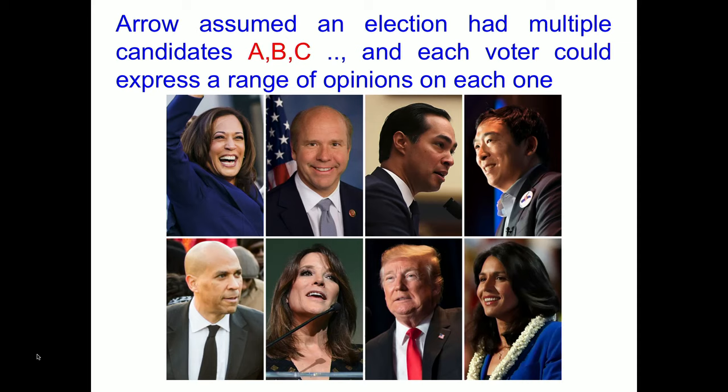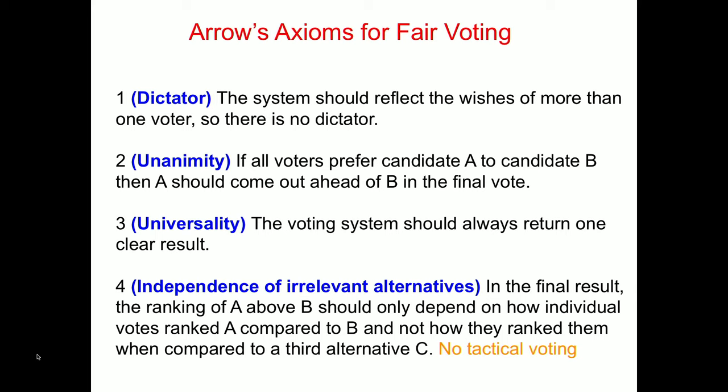The way mathematics works is that we write down axioms — things we think must be true — and then deduce properties from them. Arrow thought about elections where you have many candidates and voters have preferences. He had four axioms. Number one was the dictator axiom: if several people are voting, the vote should reflect the opinions of all of them and not just one. Number two was unanimity: if everyone prefers candidate A to candidate B, then A should win ahead of B.